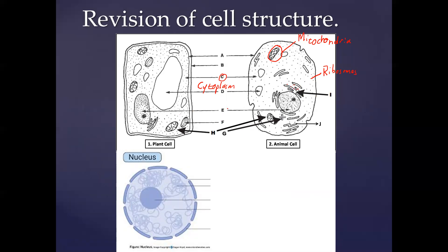Structure E is also very important in our discussions — structure E is the nucleus. On the outside of the nucleus we have the nuclear membrane, sometimes known as the nuclear envelope. Within the nuclear membrane we find small gaps, and these gaps are known as nuclear pores. Pores refer to tiny openings.